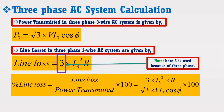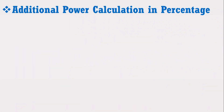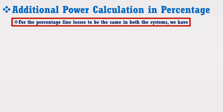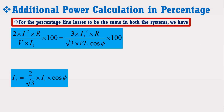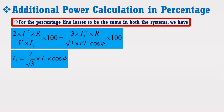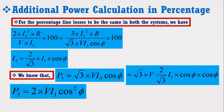At this stage, we have derived the necessary expressions for both systems. Now we can find the percentage additional power supplied by the 3-phase AC system. As we have assumed that both systems have the same losses, we can compare both losses as below. Simplifying the above expression, we get the 3-phase current equal to (2 / √3) × I1 / cosφ. Putting this expression of 3-phase current in the 3-phase power expression, we find that P3 = 2 × V × I1 × cos²φ.